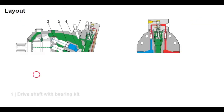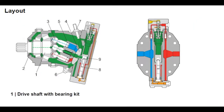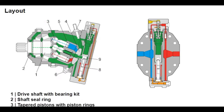The bearing kit, which absorbs forces acting in the axial and radial direction, is assembled on the driveshaft (1). A shaft seal (2), support ring and snap ring installed in the one-piece housing, are used to seal the motor. The one-piece tapered pistons (3) catch the cylinder without the need for a driveshaft. The spherical surface of the lens plate (4) supports the cylinder (5) without transferring torque.